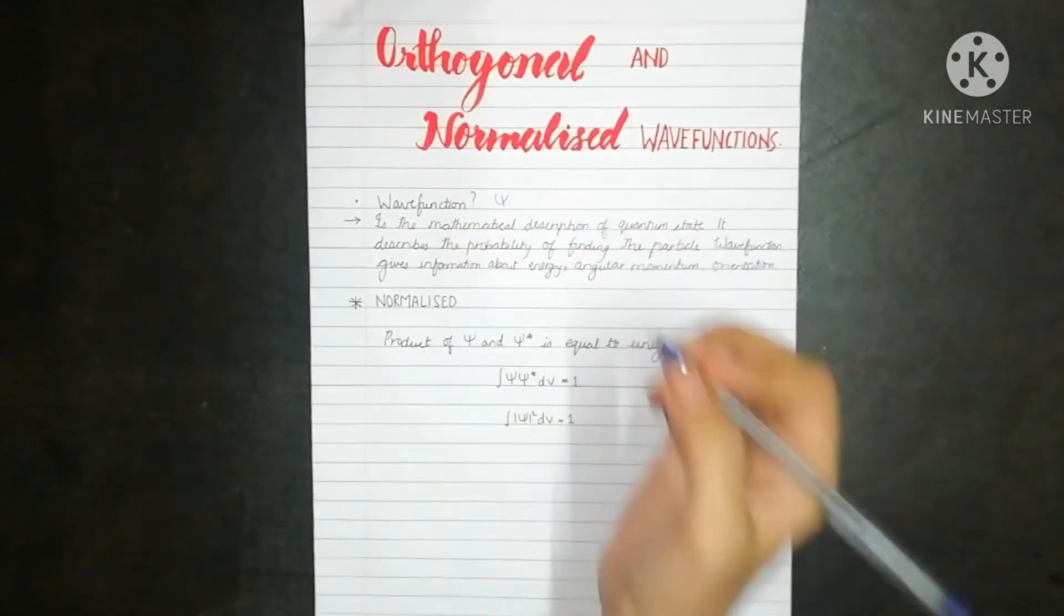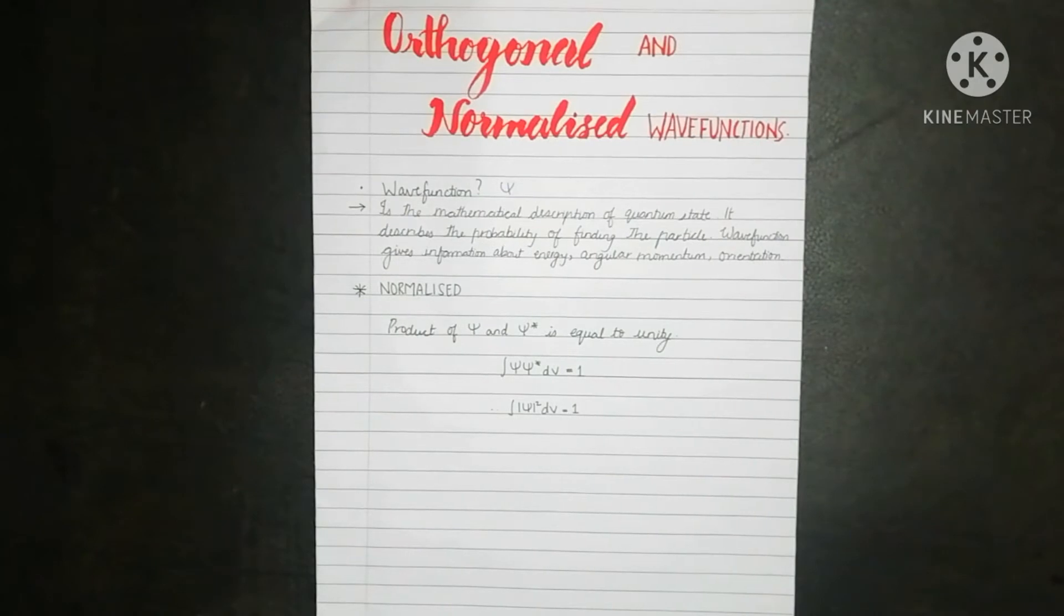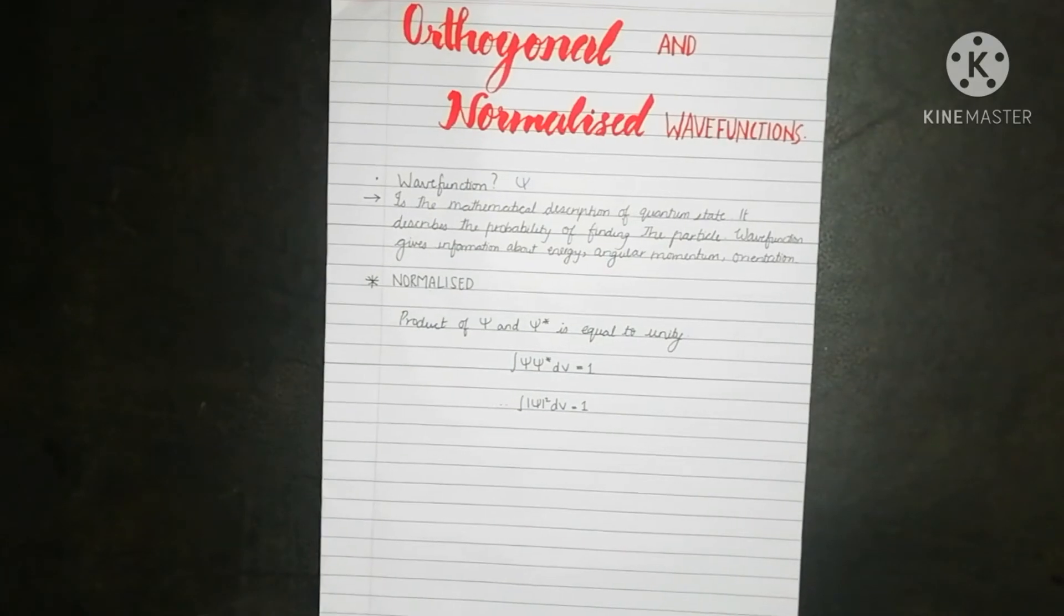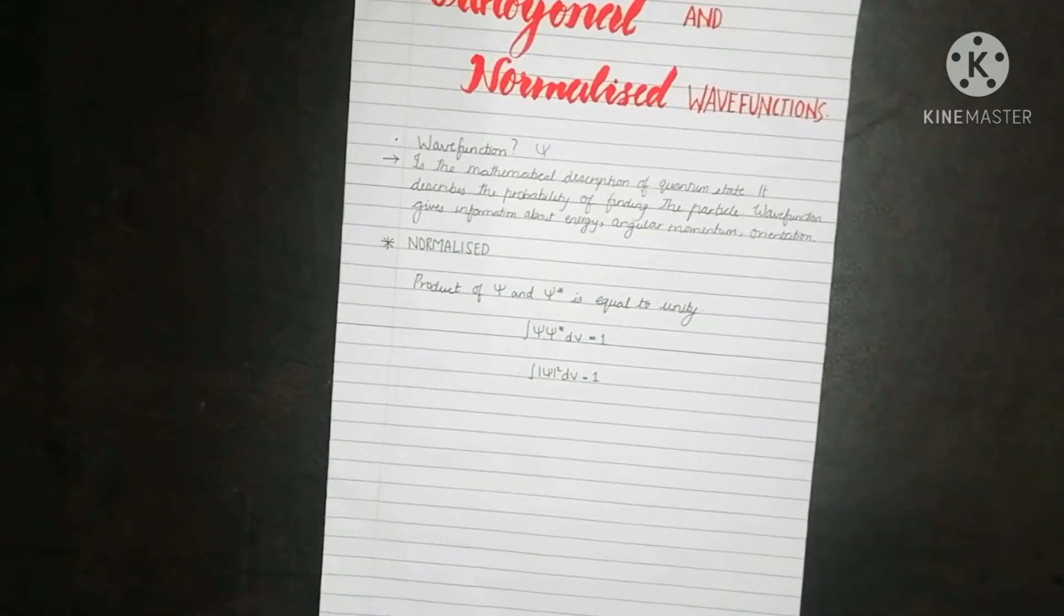It's the mathematical description of the quantum state. It describes the probability of finding the particle within a region. Wave functions give information about electrons' energy, angular momentum, and orbital orientation.